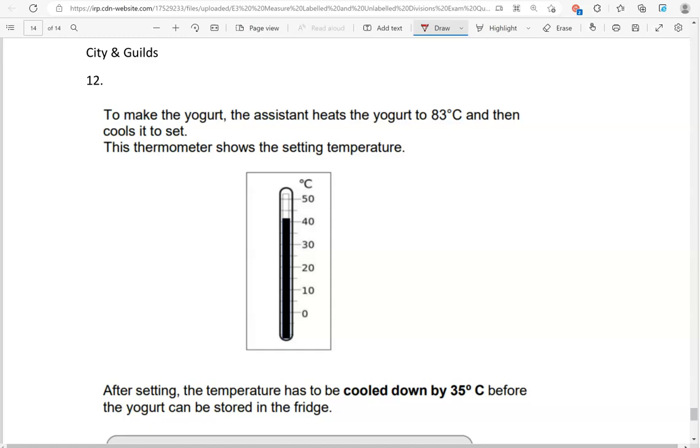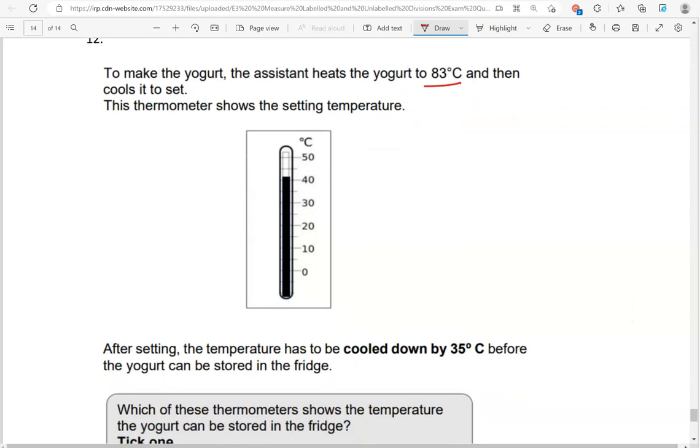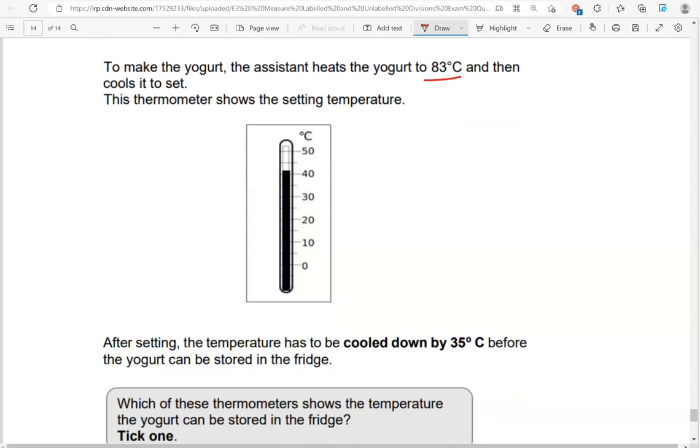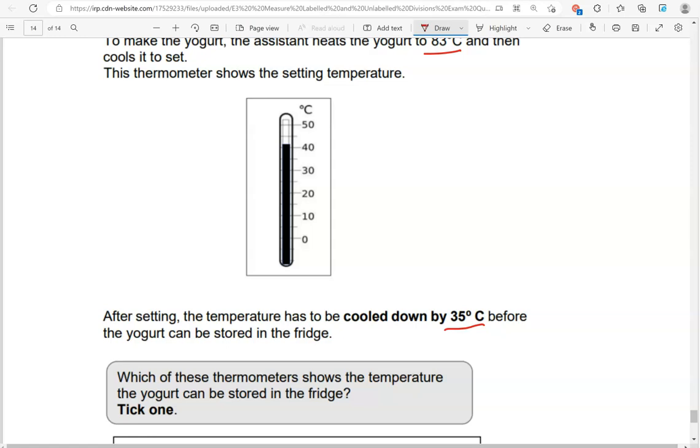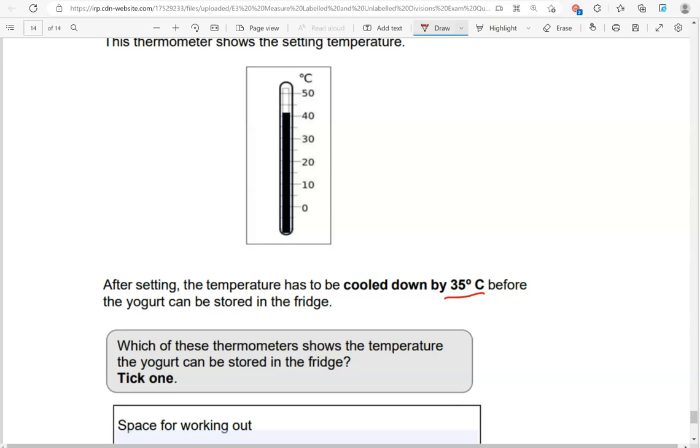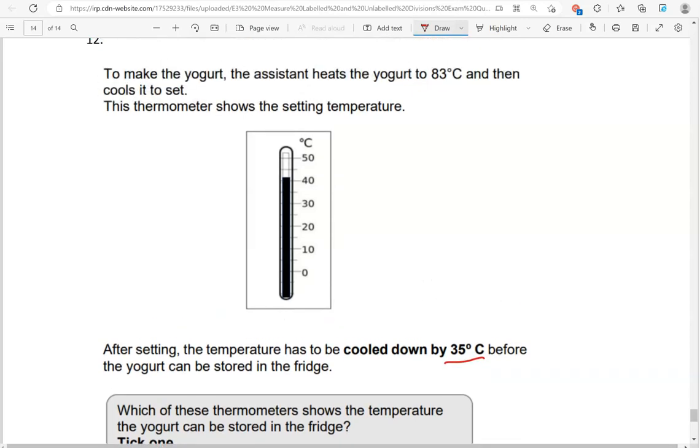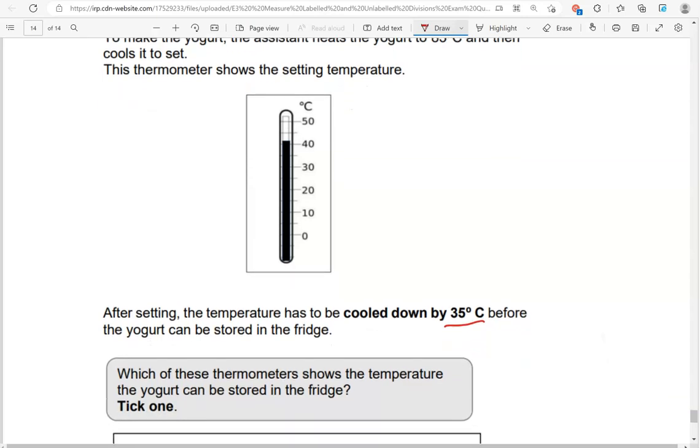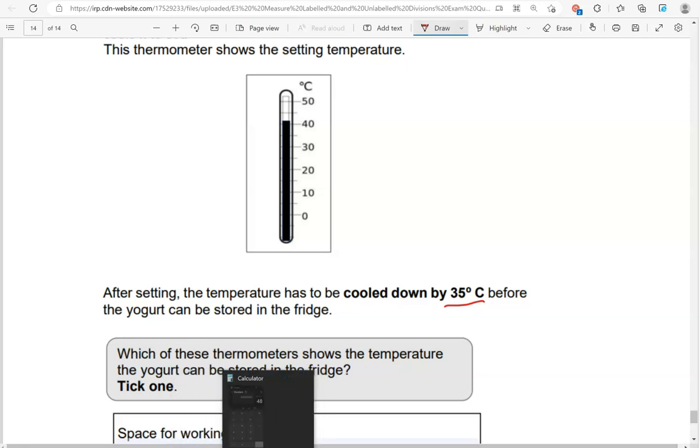To make the yogurt, the assistant heats the yogurt to 83 degrees Celsius and then cools it to set. This thermometer shows the setting temperature. After setting, the temperature has to be cooled down by 35 degrees Celsius before the yogurt can be stored in the fridge. Which of these thermometers shows the temperature the yogurt can be stored in the fridge? Tick one. So the yogurt is heated at 83 degrees Celsius and then it's cooled to set. The thermometer here shows the setting temperature, which is very close to 40 degrees Celsius.